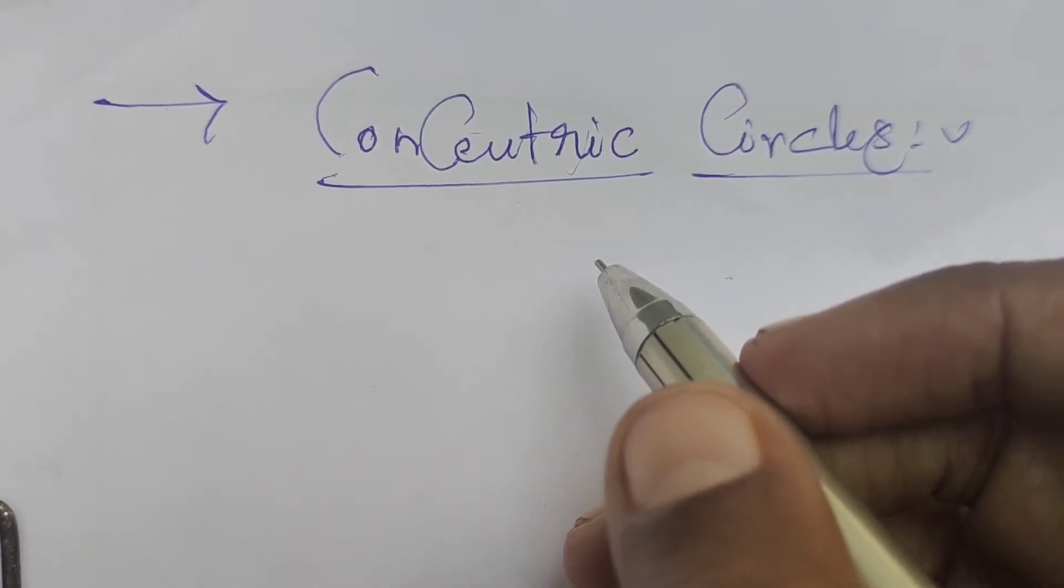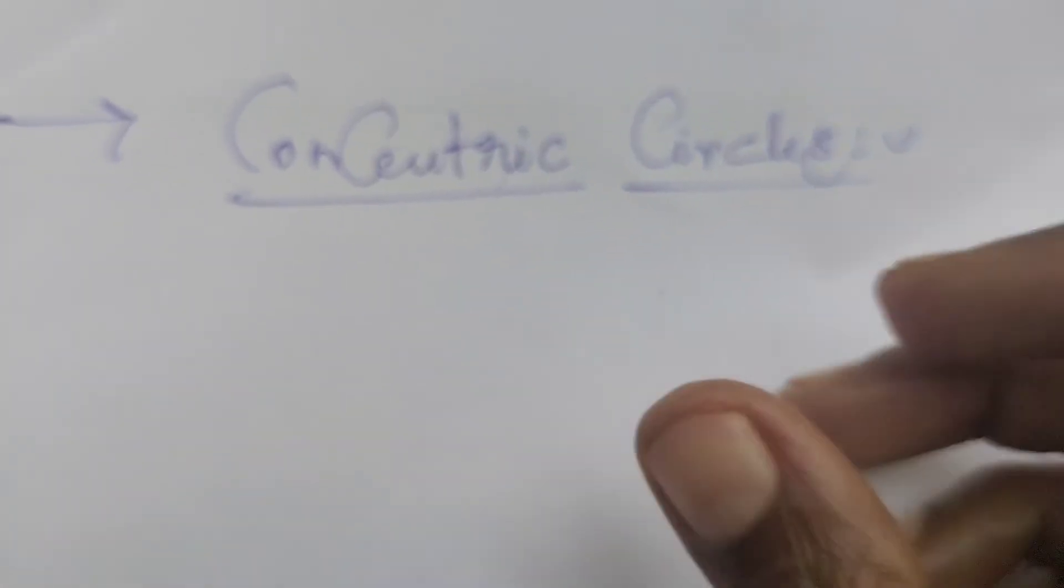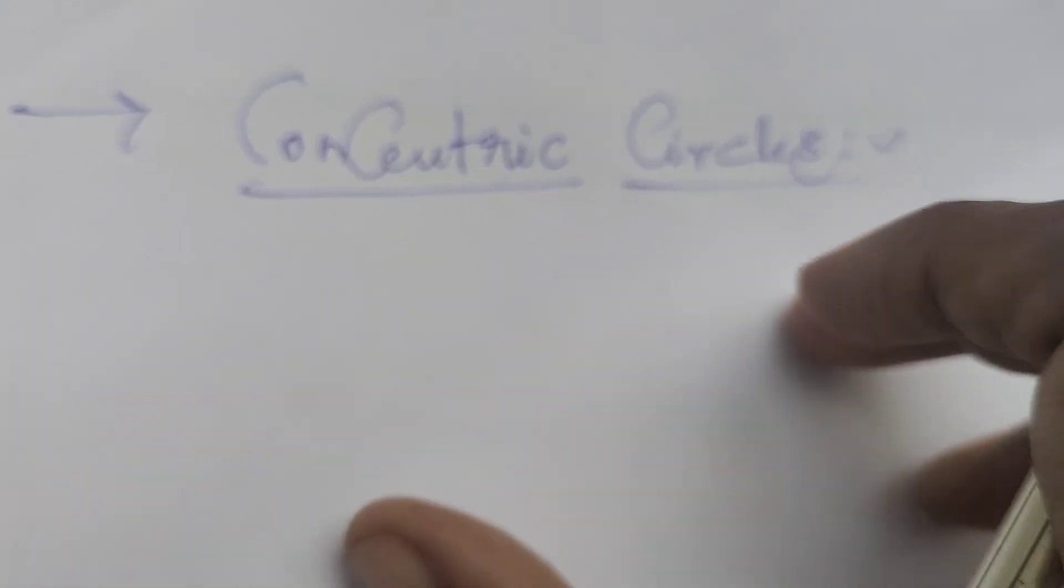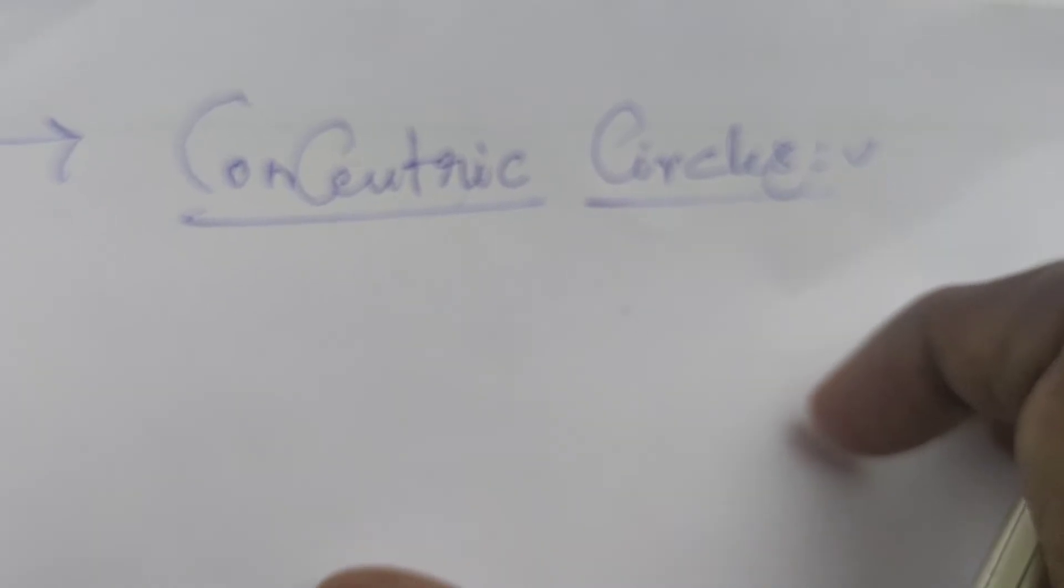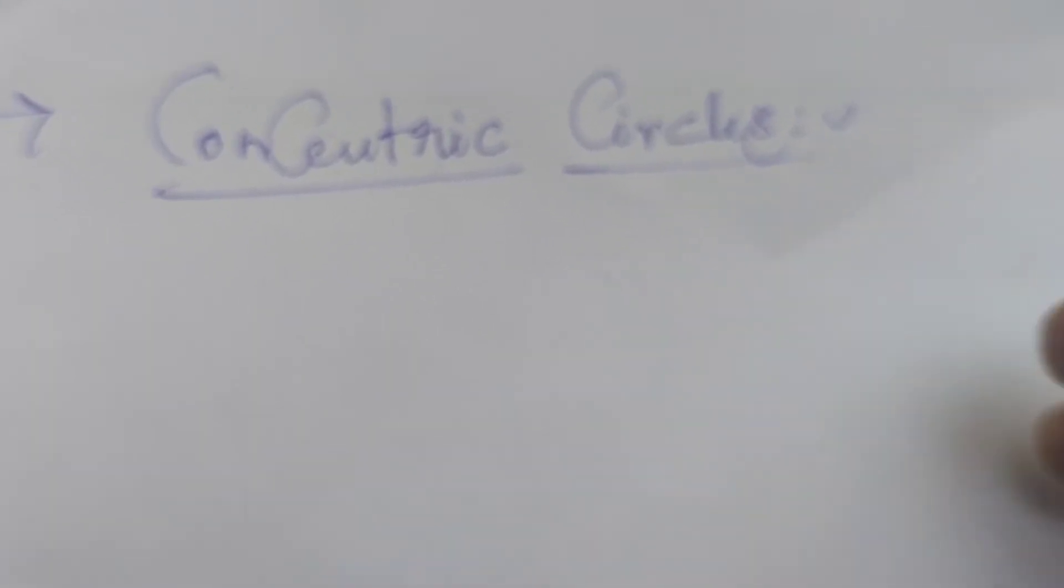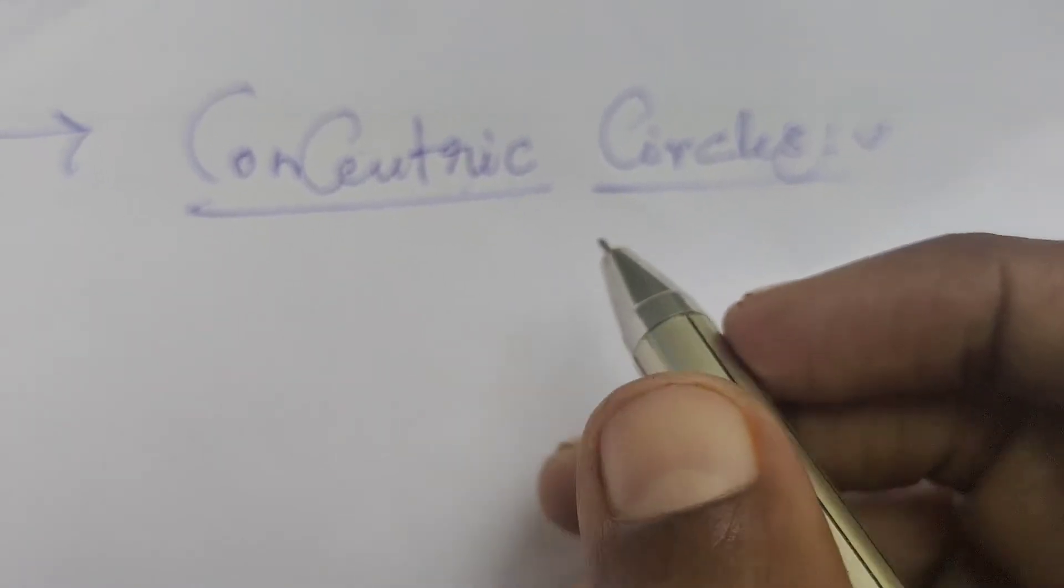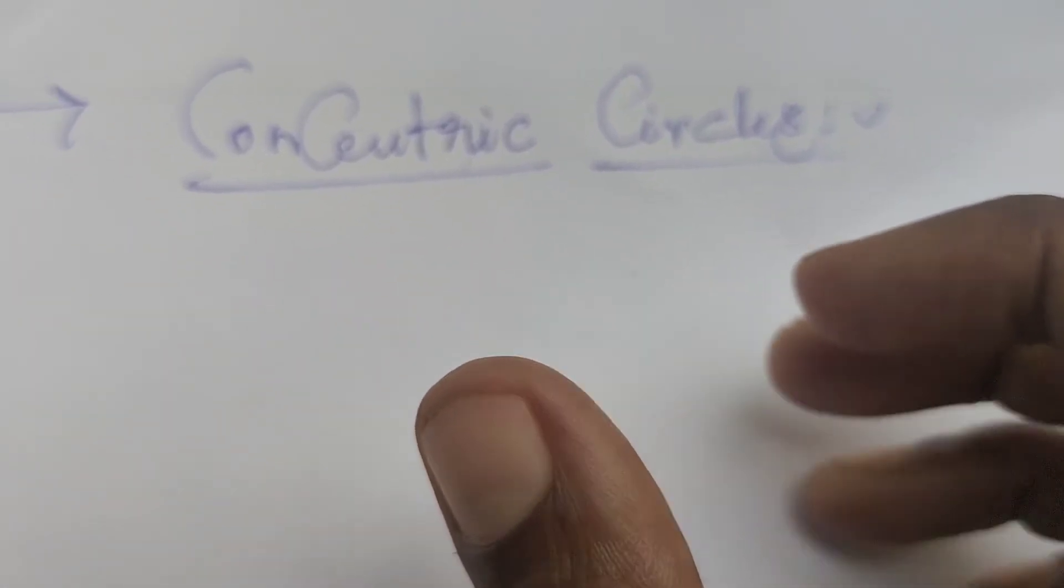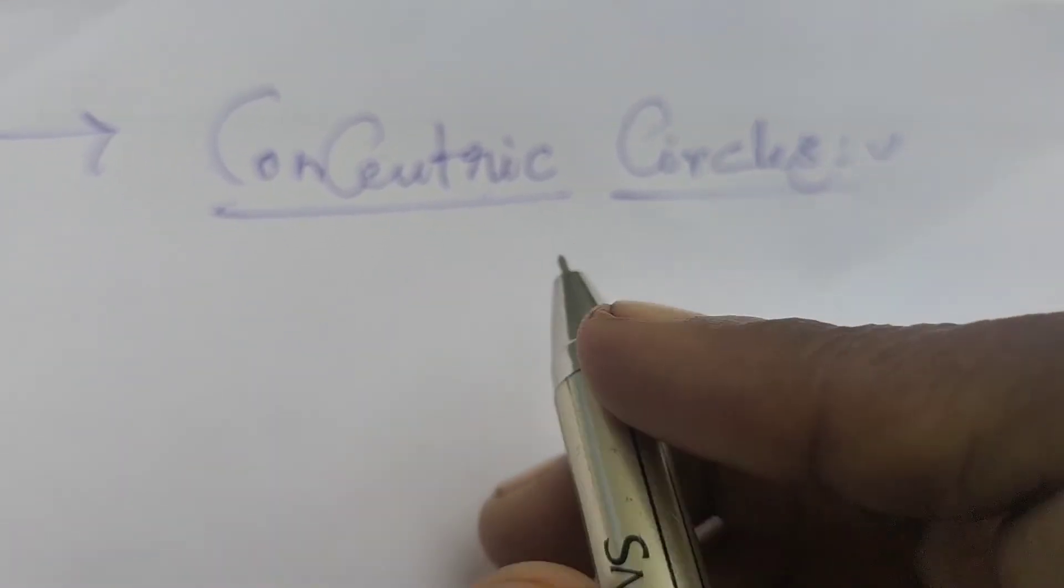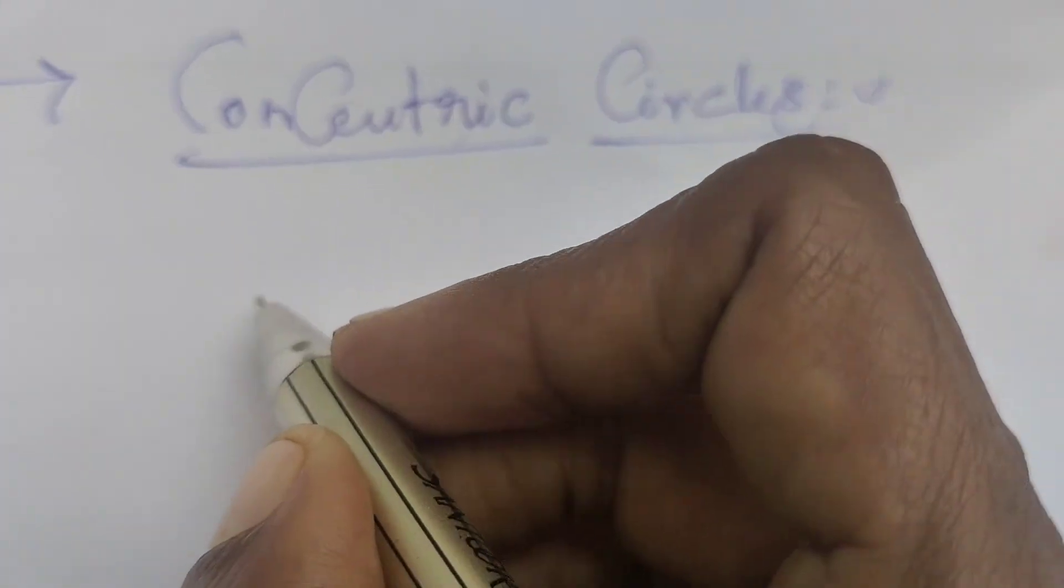Concentric circles means if two circles are concentric, they have the same center and different radii. The concentric circles differ from constant.